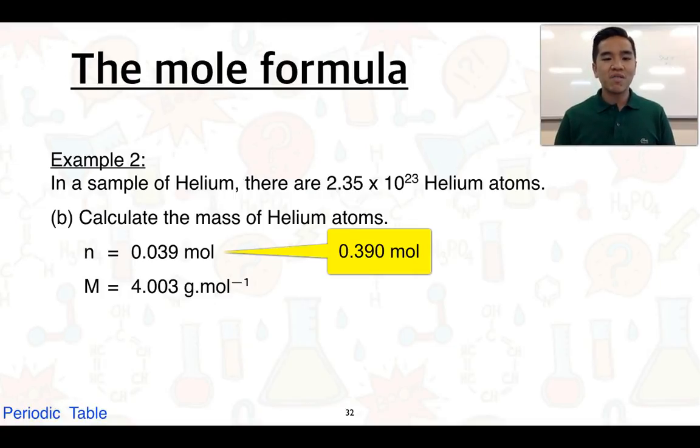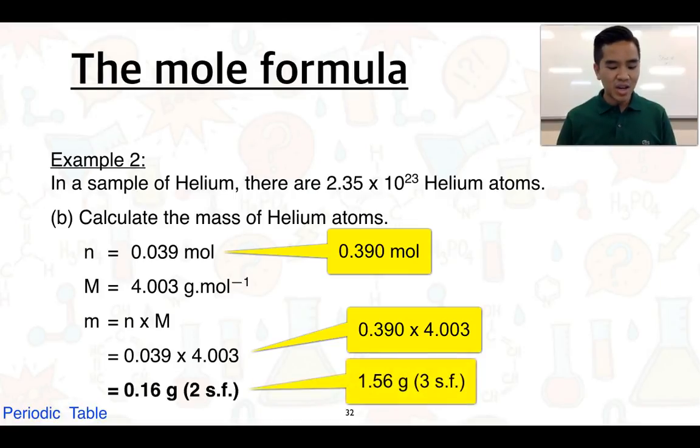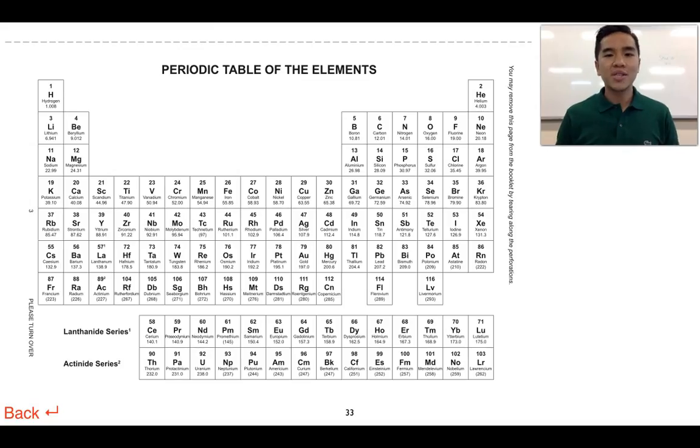With rearranging of the mole formula, the formula for mass is: m = n × M. The mass equals the number of moles multiplied by the molar mass. We substitute these values: 0.039 multiplied by 4.003. Remember to keep those answers in your calculator. We get 0.16 grams, recorded to two significant figures—though given this data, we could record to three significant figures. That concludes the second video for 1.3 on quantities of atoms. Thank you very much, and I'll see you guys next time.